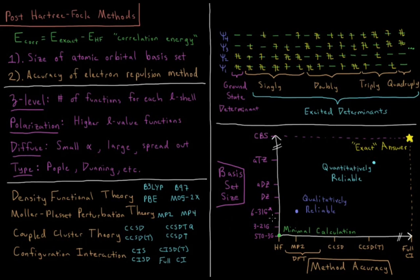So stars in Pople functions indicate polarization, and for diffuse functions in Dunning functions, having augmented or AUG in front indicates having diffuse functions. For Pople sets, having a plus in front of the G indicates diffuse functions.